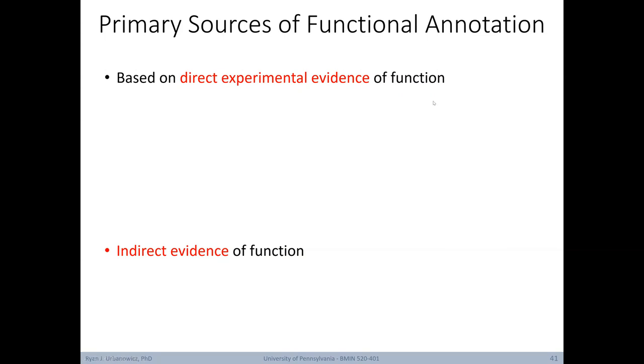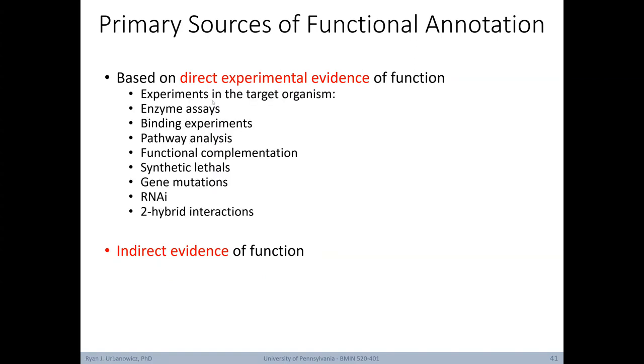There are two primary sources of functional annotations themselves. The first is based on direct experimental evidence of function. And the second involves indirect evidence of function. Direct evidence can include experiments in the target organism, such as enzyme assays, binding experiments, pathway analysis, functional complementations, synthetic lethals, gene mutations, and so on. Indirect evidence of function can come from expression analysis, structure analysis, or sequence analysis. Basically here, using these types of analyses to infer likely functionality.